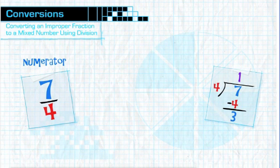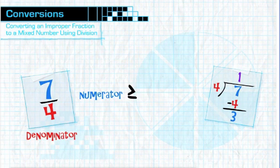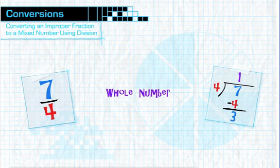Since we know that the numerator of an improper fraction is equal to, or greater than, the denominator, the resulting quotient from the division will be a whole number. When you divided four into seven, you got the quotient one. One will be the whole number for your new mixed number.